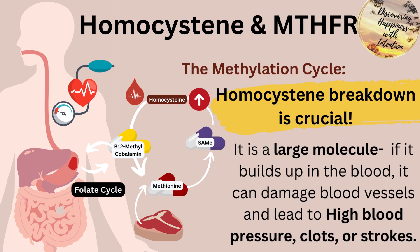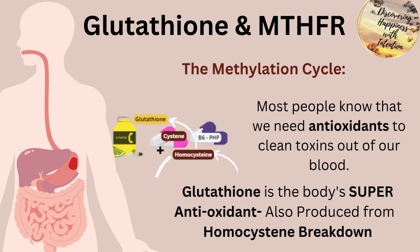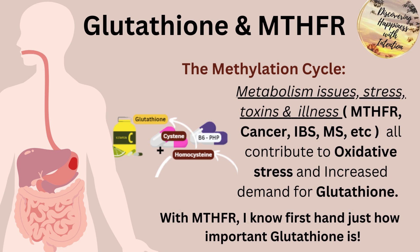Homocysteine breakdown is crucial because it is a large molecule. If it builds up in the blood, it can damage the blood vessels, causing plaque buildup on the walls, and also leads to high blood pressure, clots, or strokes. Most people know that we need antioxidants to clean the toxins out of our blood, and glutathione is the body's super antioxidant. It is also produced from the breakdown of homocysteine. Metabolism issues, stress, toxins, illness — including MTHFR, cancer, IBS, MS, and a whole range of conditions — all contribute to oxidative stress and increased demand for glutathione. Personally, with MTHFR, I know firsthand just how important glutathione is to helping the body feel good and removing toxins from the body.